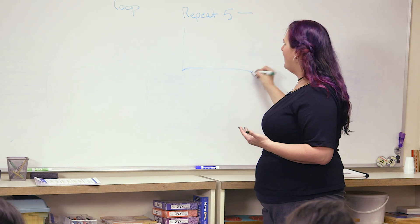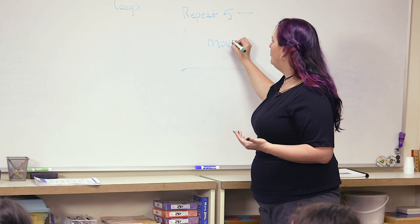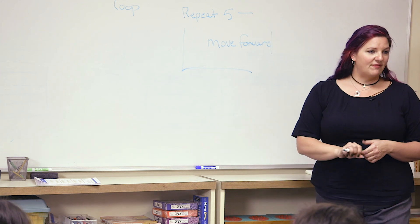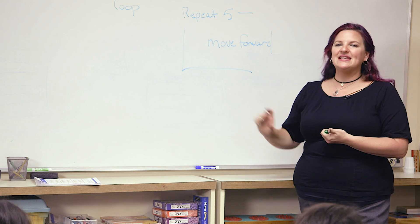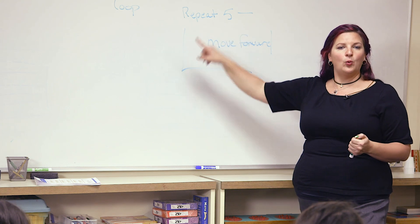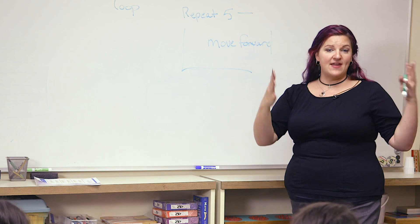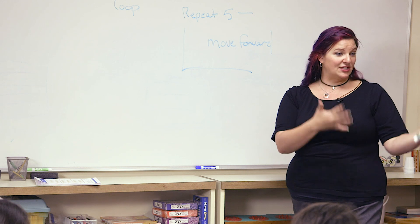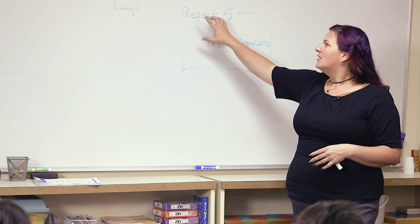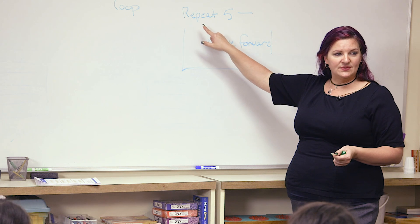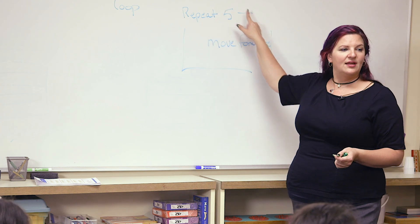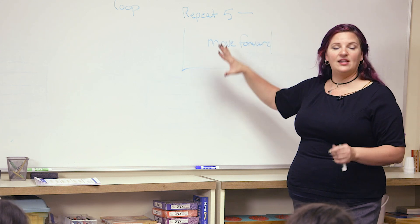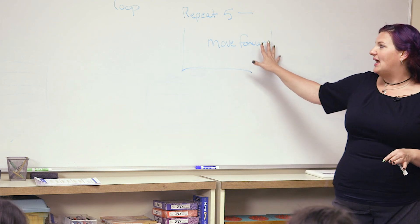The thing that we repeat five times might be something like move forward. When we repeat something five times, we go through and it's kind of like it's keeping track one at a time. It will have a variable — if you remember that from when we were talking about the bracelets or the sun catchers — we can have a variable that starts out at zero, and it'll go through and say one, two, three, four, five, and then it'll be all done.